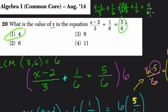So that's 4 over 6, plus 1/6, that's 5/6. We add our numerators. So in other words, this tells us when x is 4, this equation is balanced. So that's the correct answer. Thanks.